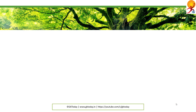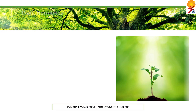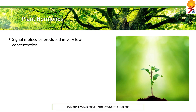Plant hormones are signal molecules produced within the plant and occur in extremely low concentrations. Hormones regulate cellular processes in targeted cells locally and when moved to other locations in the plant.